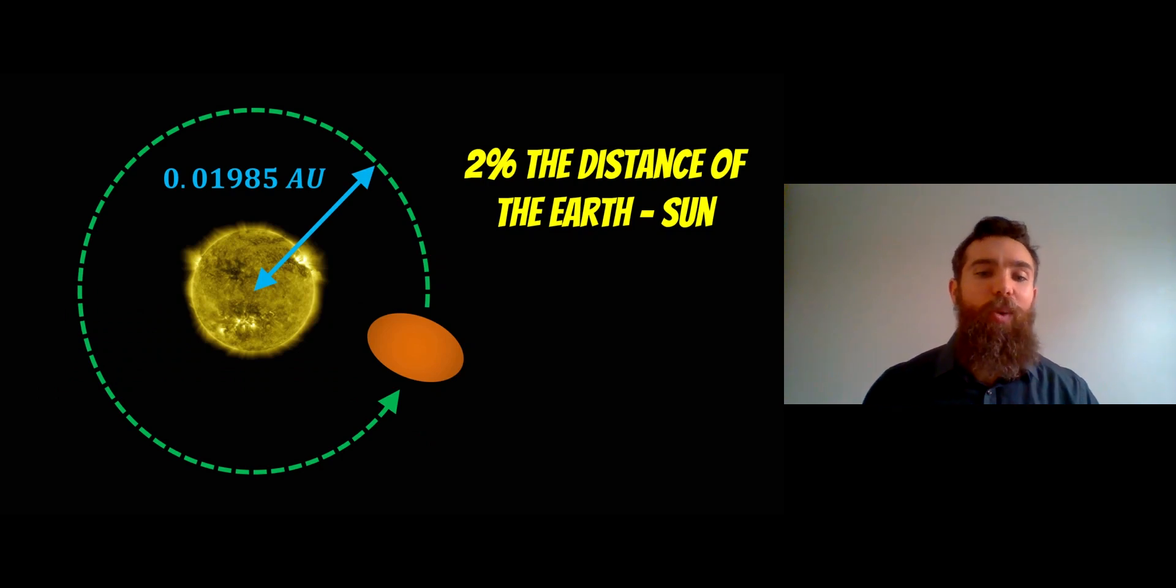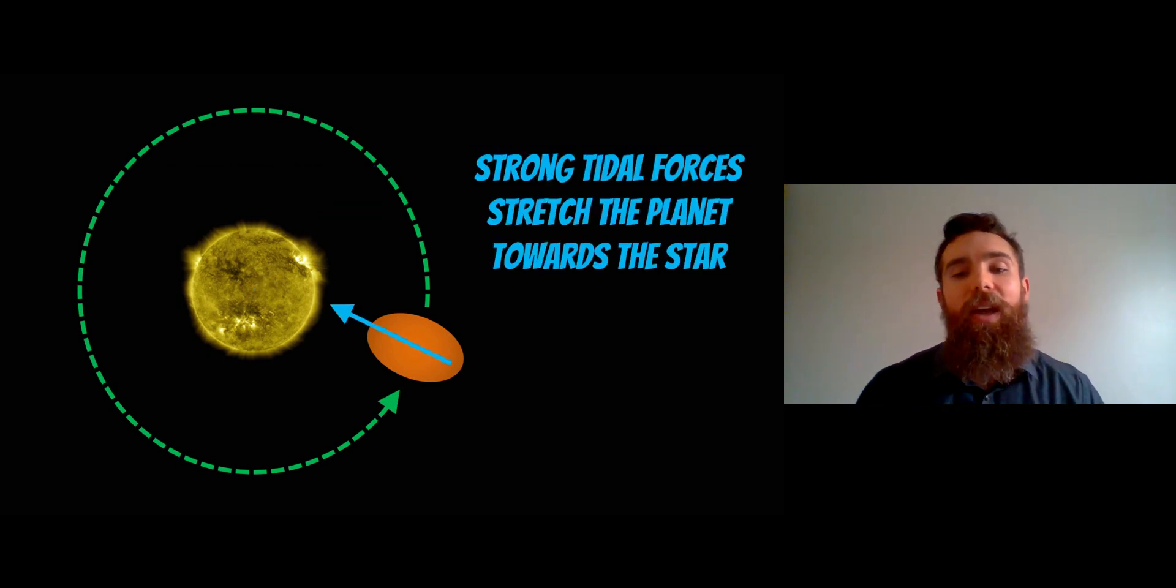We know that it's going to be quite close in because its orbital period is quite low, but it's actually only about two percent the distance between the Earth and the Sun. So it's about 0.2 AU from its star, very close. Because of that, there are strong tidal forces which stretch the planet towards the star. The gravitational forces on the edge closest to the star are greater, so you get this tide across the planet which stretches it, causing the shape.